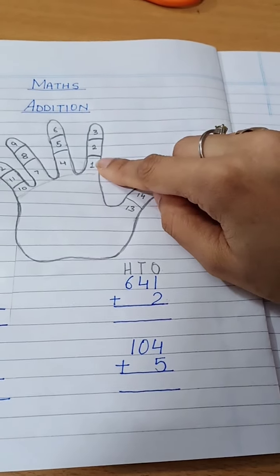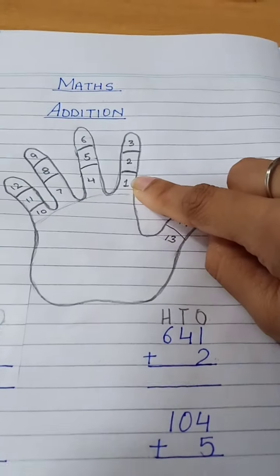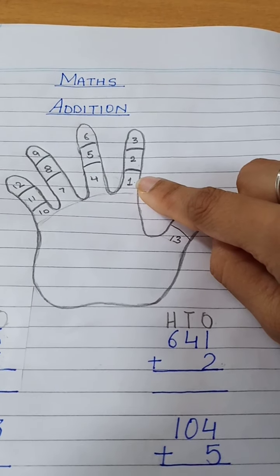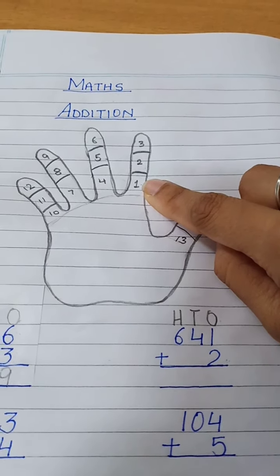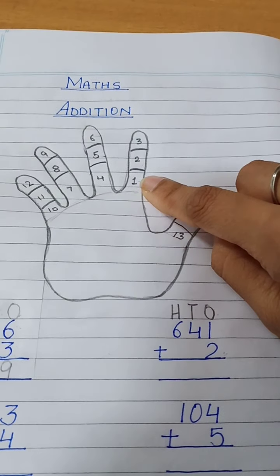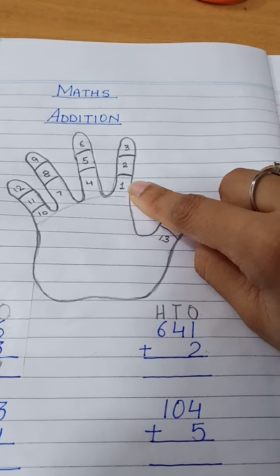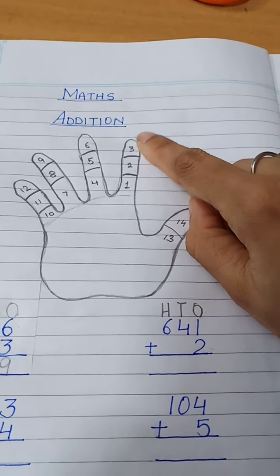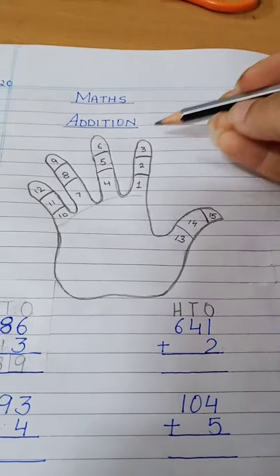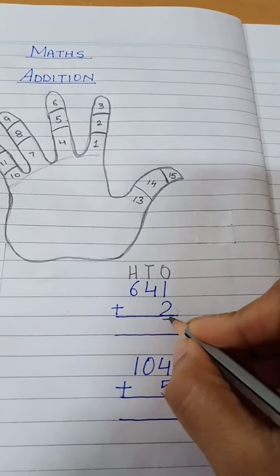I count 1 first. Now I have to add 2 to that. So I will count 2 more — going up or down on the fingers. So 1, 2. Then you can see which number I got — I got 3. So I will write here 3.